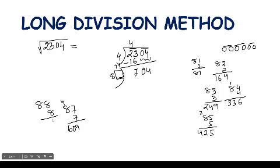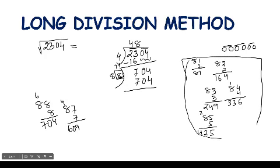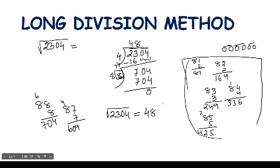Eight eights are sixty-four, carry six; eight eights are sixty-four plus six equals seventy, giving seven hundred four. So we place eight in the quotient. The square root of two thousand three hundred four equals forty-eight. This is the long division method. We have now learned all three methods. Hope everyone understood — thank you.